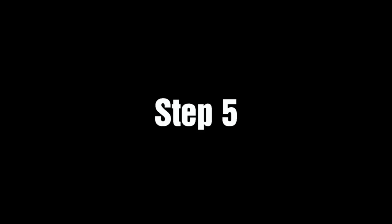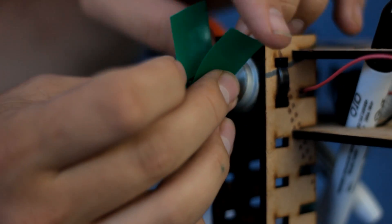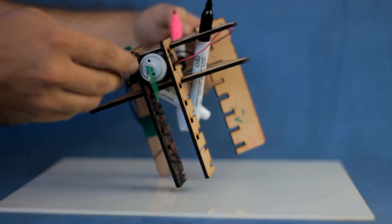Now for the final step, it's time to add your counterweight. I've used a piece of insulation tape to tape a coin to the motor.